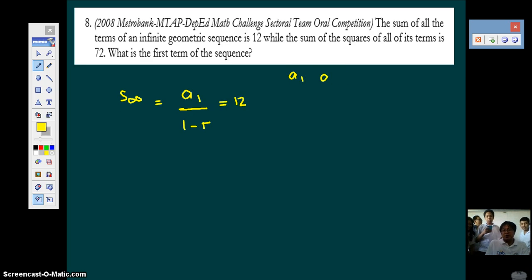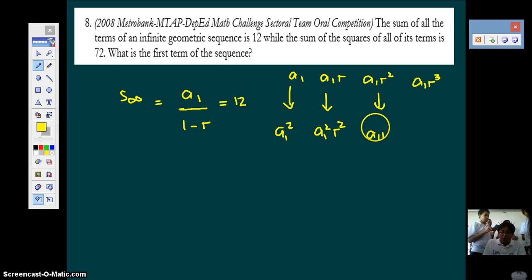Let's write the terms. We have a1. The next must be a1 times r, the next must be a1 times r squared, the next must be a1 times r cubed, and so on. So another condition is that the sum of the squares of all its terms is 72, meaning what you're adding are the squares of each. So here it's a1 squared, a1 squared r squared, here a1 squared r to the fourth, and here you have a1 squared r to the sixth. So you're adding the squares infinitely, getting the sum.